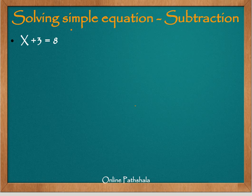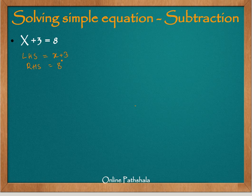Let us start with the first equation: x plus 3 equals 8. Here our left hand side is x plus 3 and the right hand side is 8. To solve this equation we have to isolate x, and how we isolate x depends on this term. We have left hand side which is x plus 3.